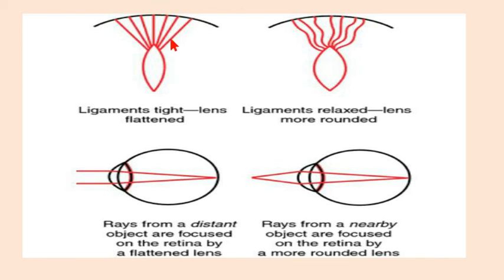When ciliary muscles relax, it results in the flatter shape of the lens. That's how our lens changes its shape in order to focus on near and distant objects.